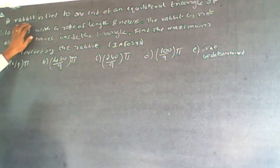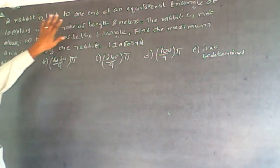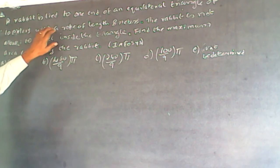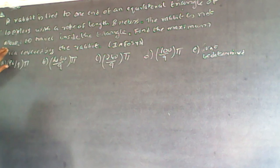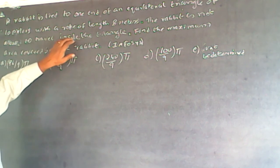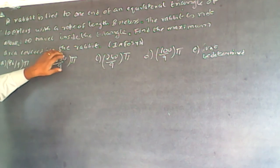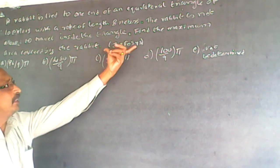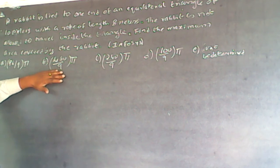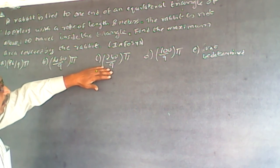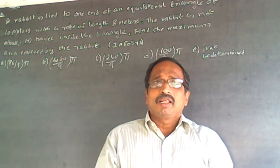The question is: a rabbit is tied to one end of an equilateral triangle of 10 meters with a rope of length 8 meters. The rabbit is not allowed to travel inside the triangle. Find the maximum area covered by the rabbit. This question has been asked in exams. The options are 96π/9, 480π/9, 240π/9, 100π/9, and can't be determined.